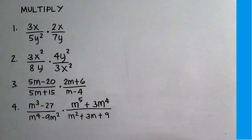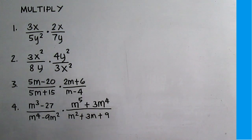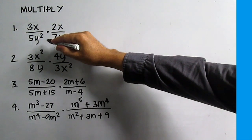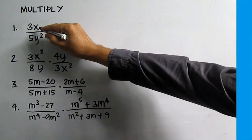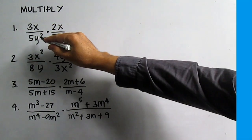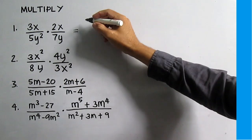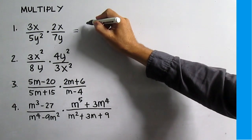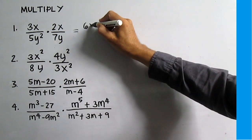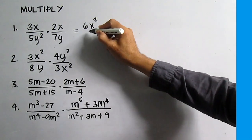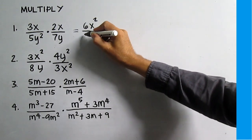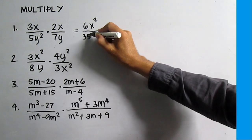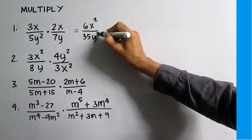Let's multiply. Number 1: 3x over 5y squared times 2x over 7y. Multiply the numerators together, then multiply the denominators together. 3 times 2 is 6, and x times x is x squared. Over 5 times 7 is 35, and y squared times y is y cubed. The answer is 6x squared over 35y cubed.